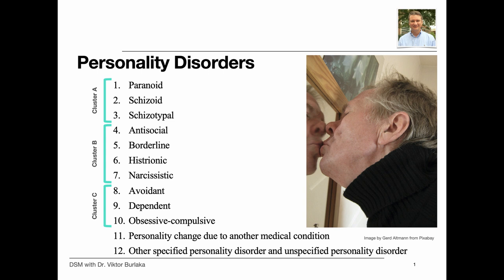All humans, and many other species, have personality traits. These traits represent settled ways in which people experience, perceive, and interact with everything and everyone in their environment. When these traits become rigid and start causing distress or impair the functioning of the individual, then we might suspect that the individual has developed a personality disorder.